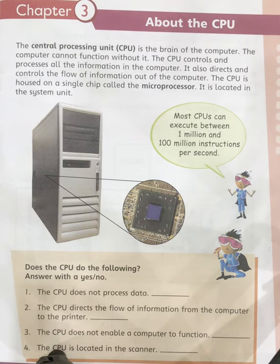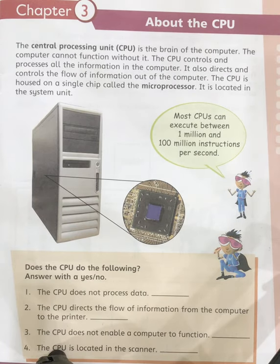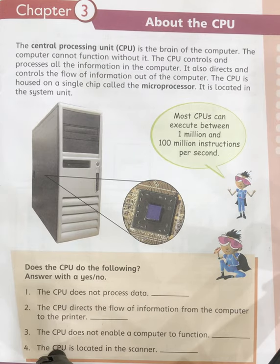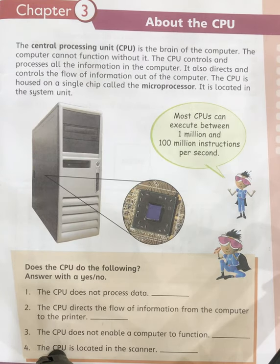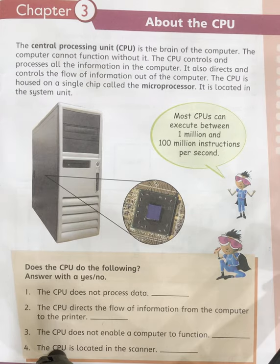CPU is the brain of the computer — it controls all the functions of the computer and processes all kinds of data. Whatever data we enter into the computer with the help of any input device, like the keyboard, mouse, or scanner, the CPU processes that data and gives us the output we can see on our output devices like the monitor. For example, if I type my name 'Fatima' F-A-T-I-M-A with the keyboard, the CPU will process that information and give me the result on the monitor.